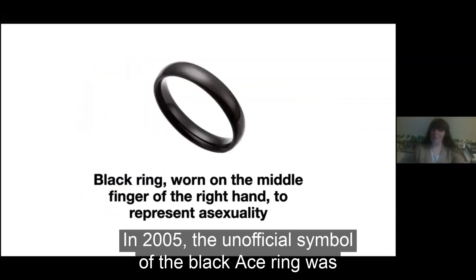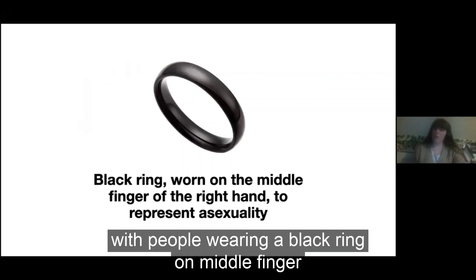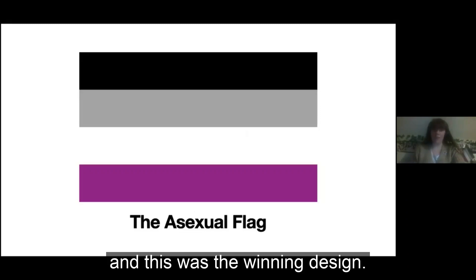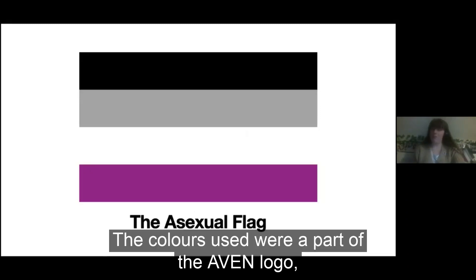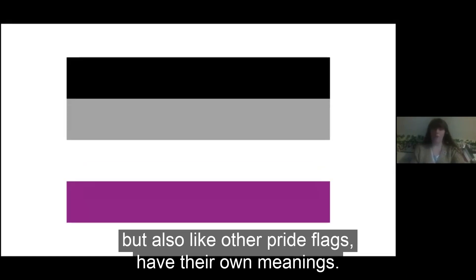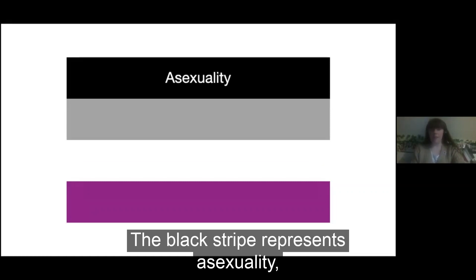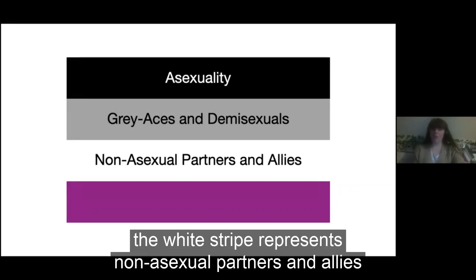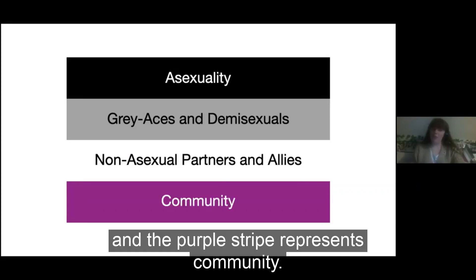In 2005, the unofficial symbol of the black ace ring was suggested, with people wearing a black ring on the middle finger of their right hand to show that they were asexual, and a white ring on the left middle finger for aromantics followed. This is still prevalent today. And in 2010, our pride flag was created. AVEN held a competition for people to submit designs, and the members voted on the winning design. The black stripe represents asexuality, the grey stripe represents grey aces and demisexuals, the white stripe represents non-asexual partners and allies, and the purple stripe represents community.